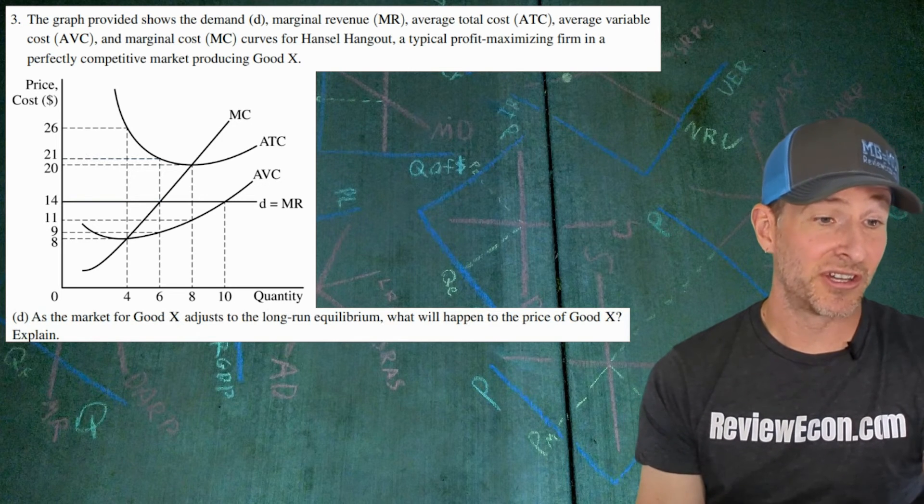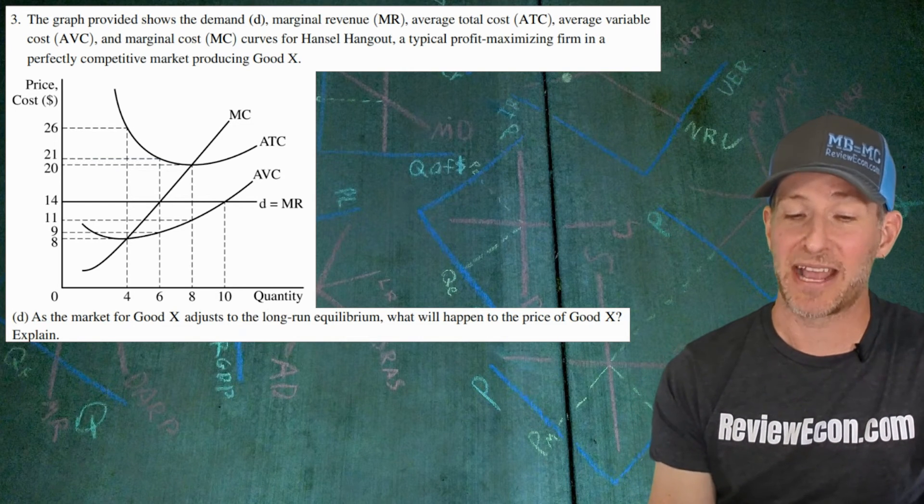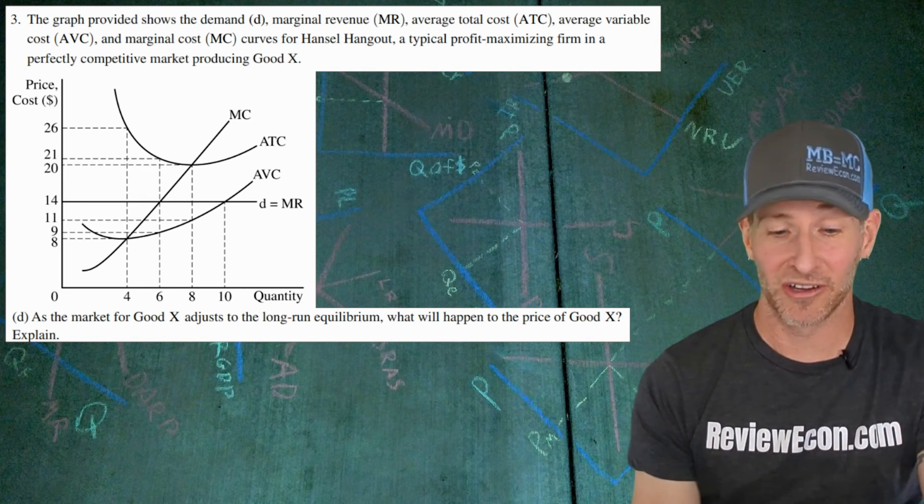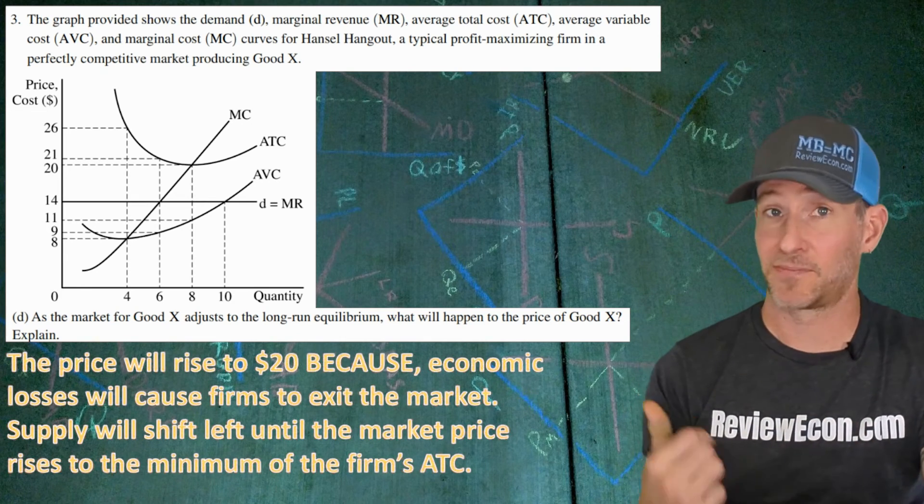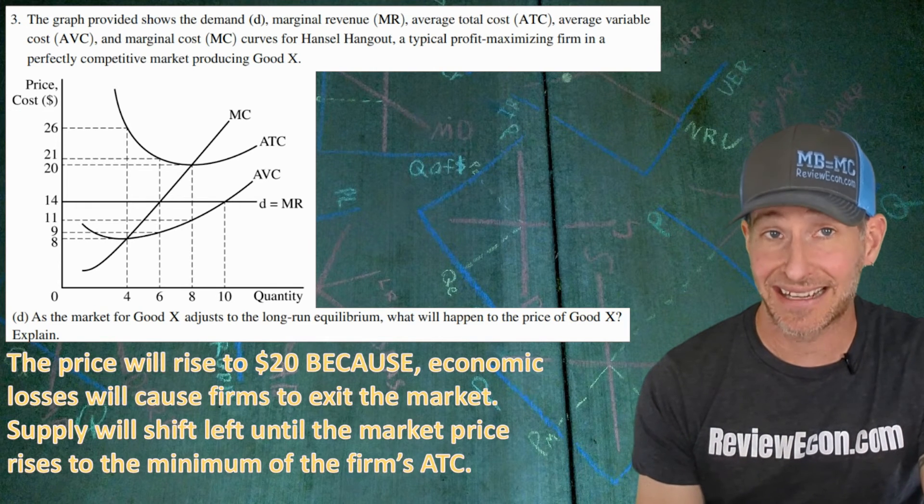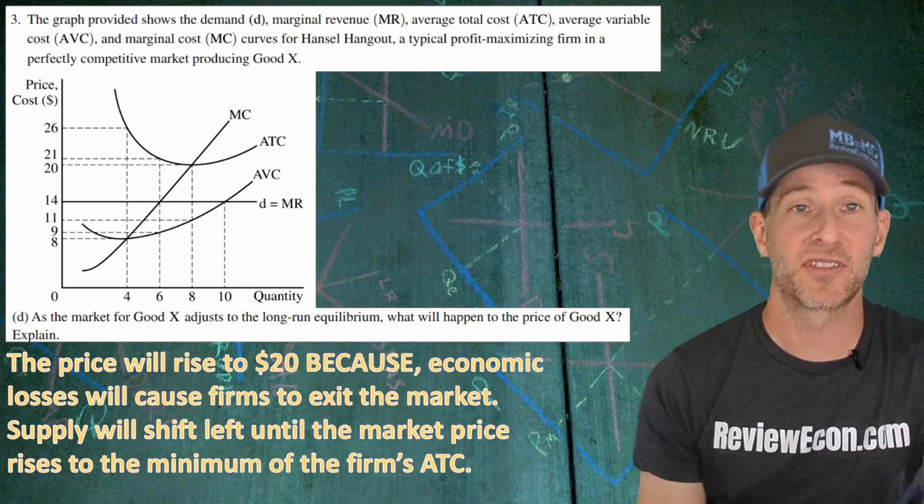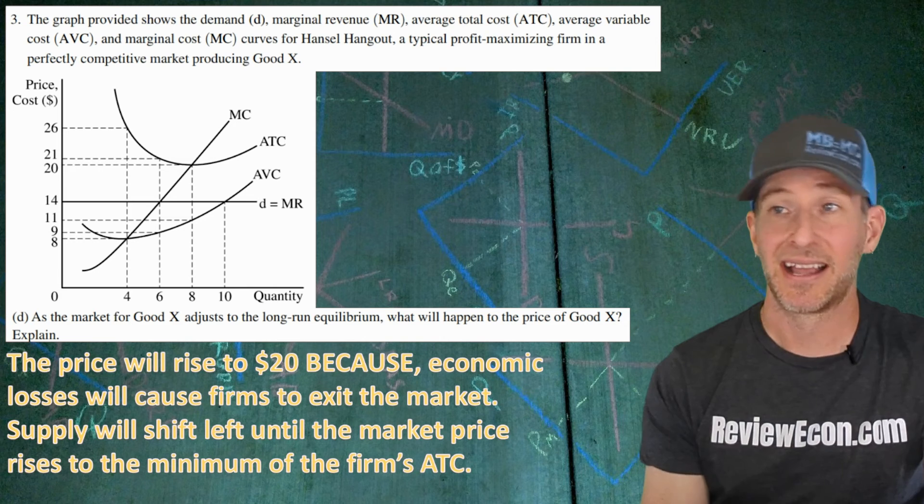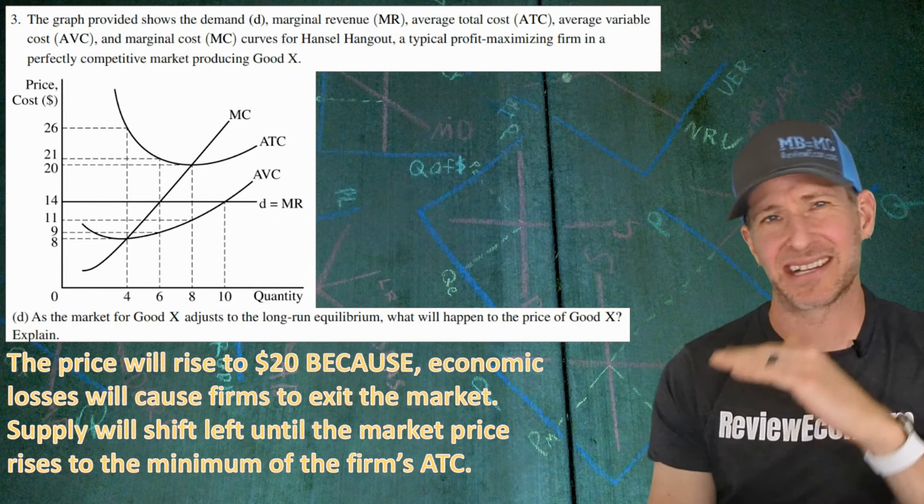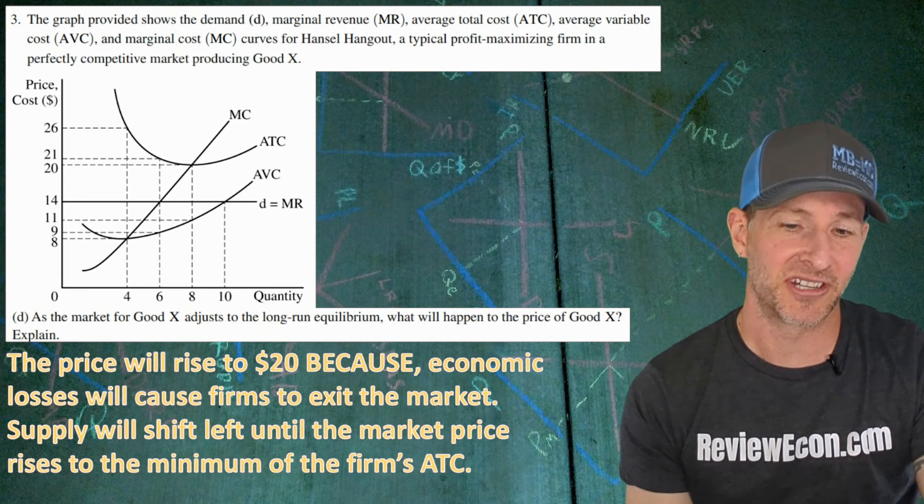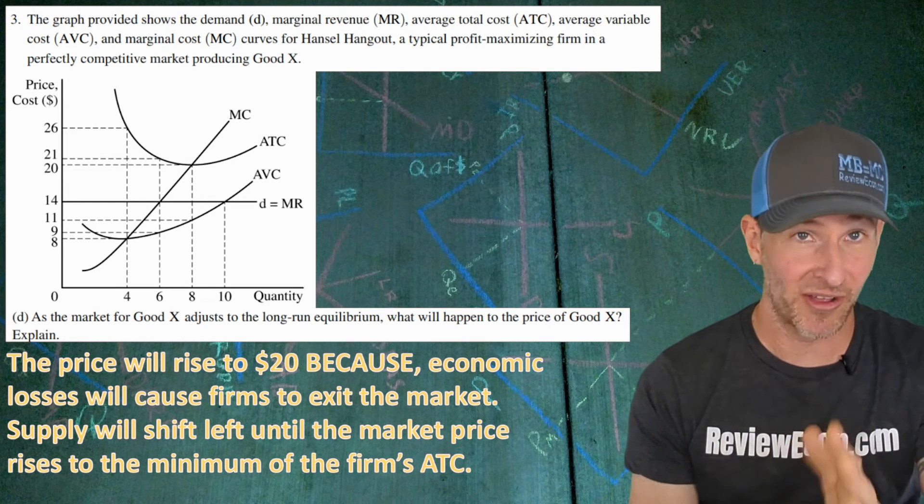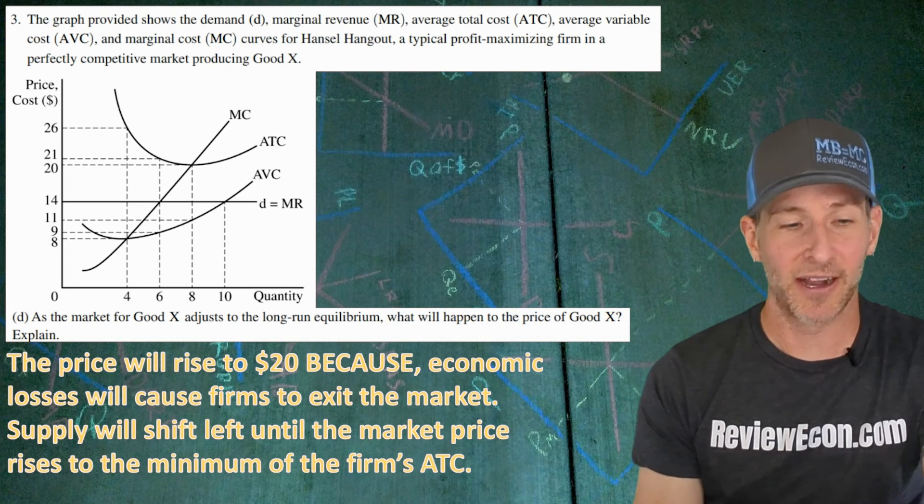Here we go. Next, as the market for good X adjusts in the long run, what will happen to the price of good X? Remember, in the long run, the price will equal the minimum of the average total cost curve. In this case, that's $20. But we have to explain it. So the price will rise to $20 because economic losses will cause firms to exit the market. You've got to mention the firms exiting the market. And that will shift the supply curve to the left until the market price reaches the minimum of the ATC at $20. I don't know for sure if you'll have to mention the minimum of the ATC or $20, but I'm being extra thorough this time. Sometimes they make questions easier on the rubric, sometimes it's more difficult. They're trying to distinguish between the twos, fours, threes, fives, and all that stuff. That's why sometimes the rubrics will be one way or the other.